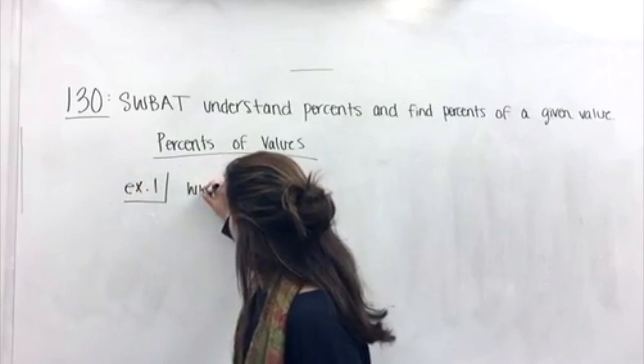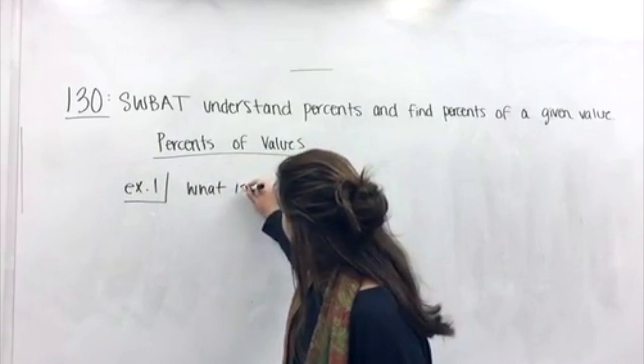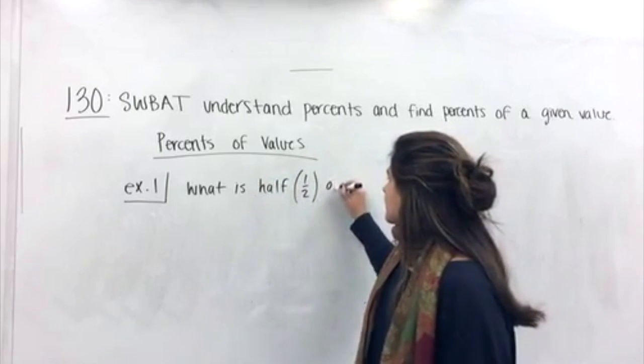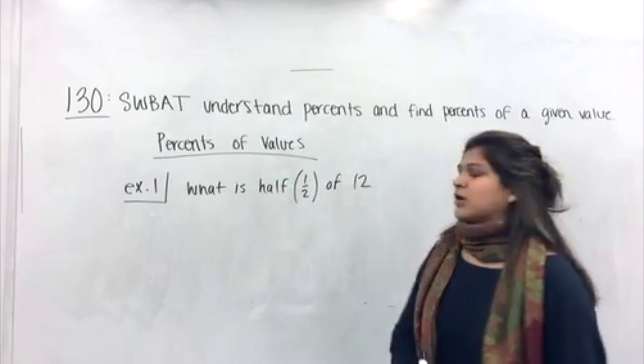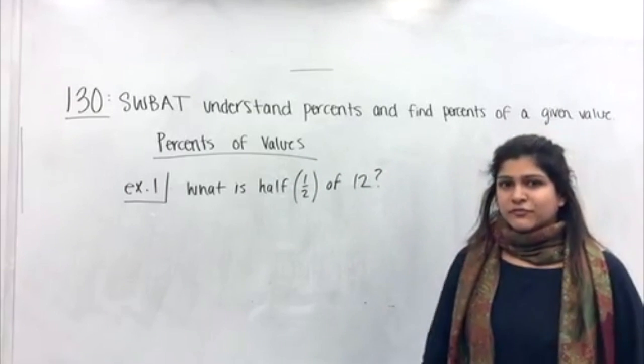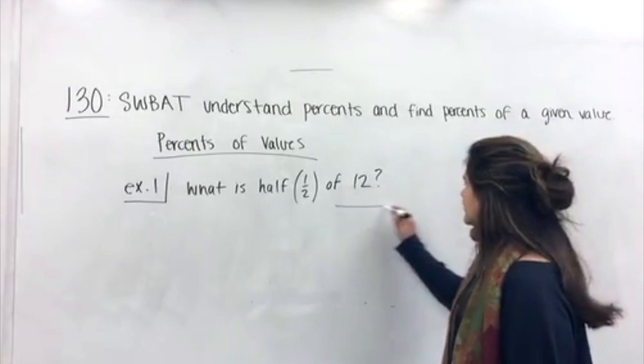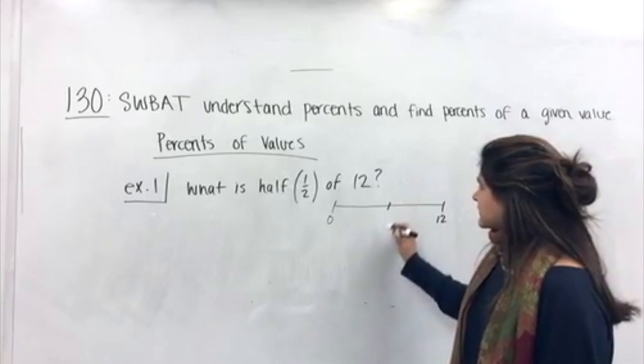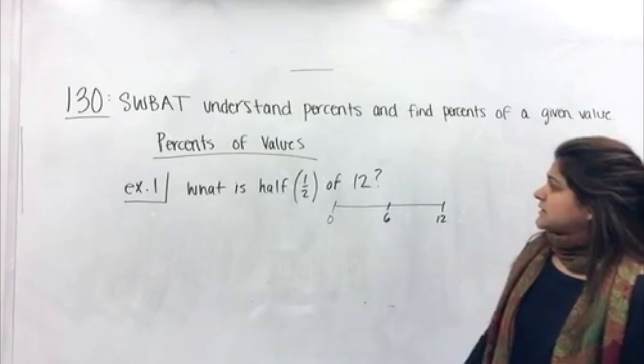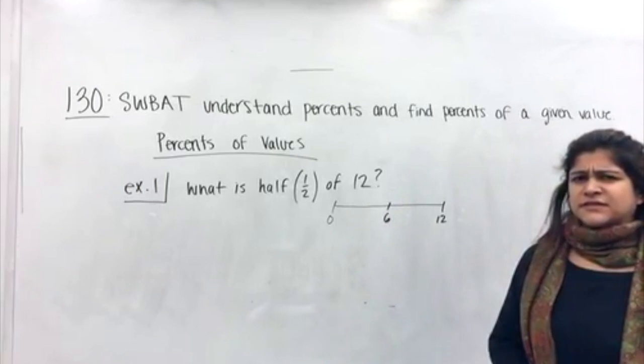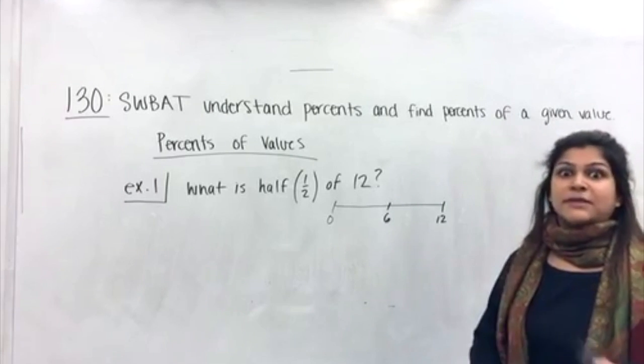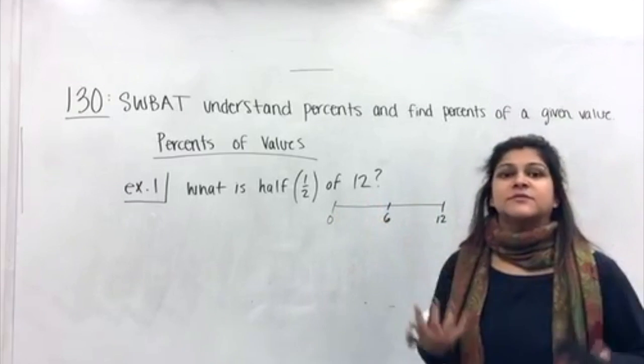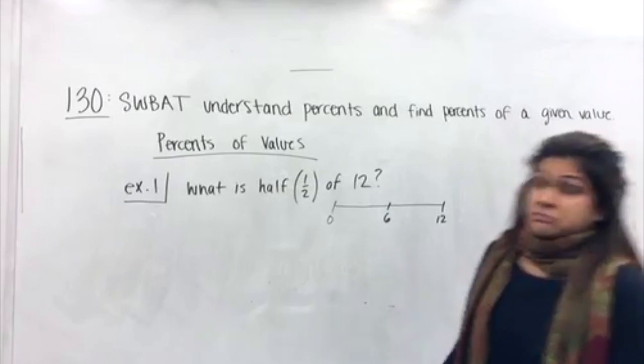Now, we are going to find, finally, percents of values, and we're going to have this conceptual idea first. We got to get down, like, what's really happening before we just use these smart cuts right and left. So, if I asked you to find, under percents of values, let's do example one. If I said, what is, remember you are writing this down with me, half of twelve. What is half of twelve? Hopefully, you're like, oh, well, that's six, the center. We have zero here, and we have twelve here. Half way through, that's going to give us six.